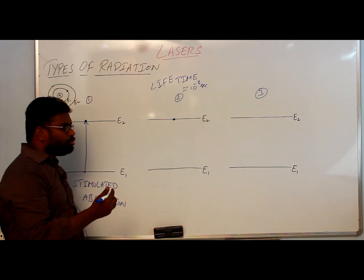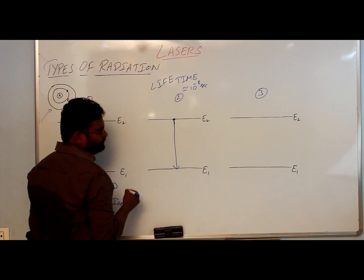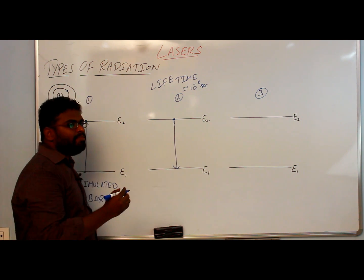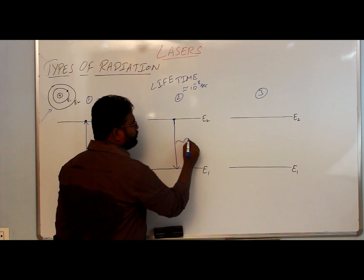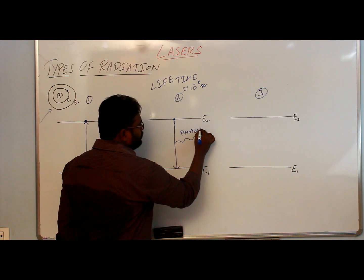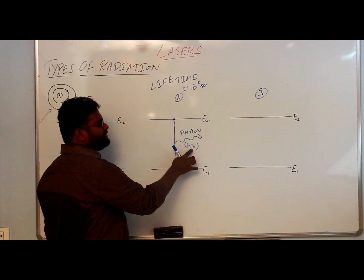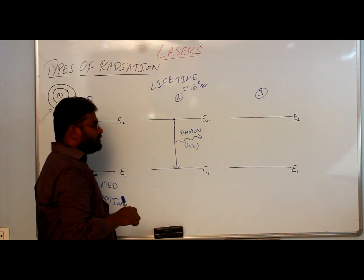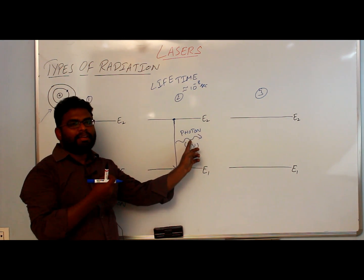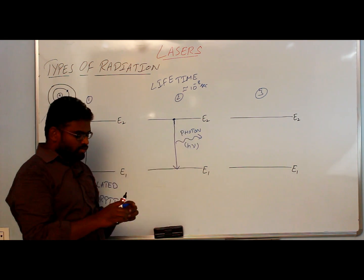After the lifetime of the electron is over, the electron automatically comes to the ground state — it makes a downward transition. While the electron is coming down, it emits energy in the form of a photon. The photon's energy equals hν, where h is Planck's constant and ν is the frequency of the photon. So while coming down, it is emitting light energy.